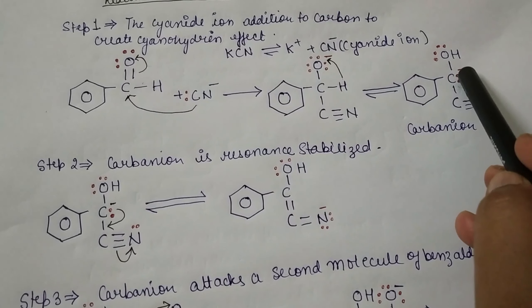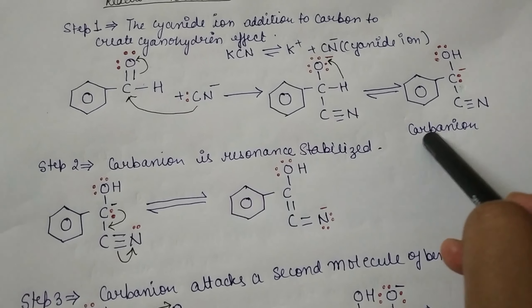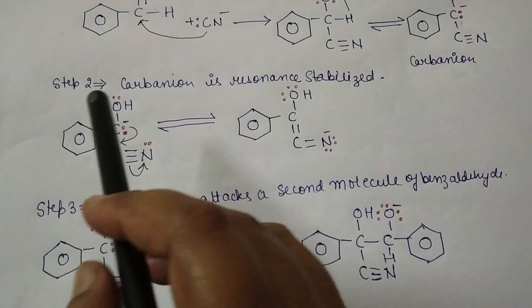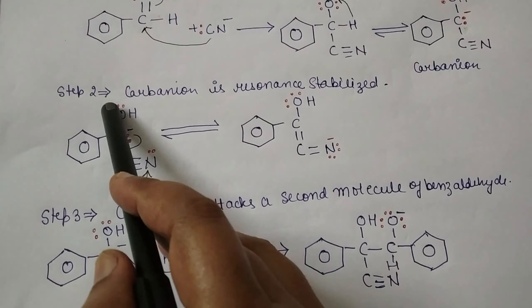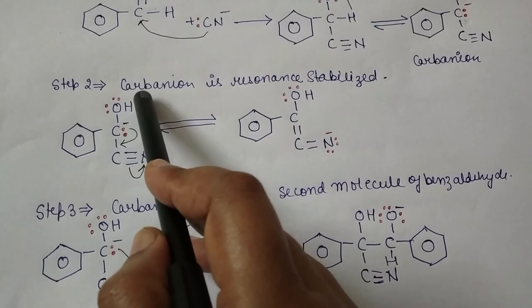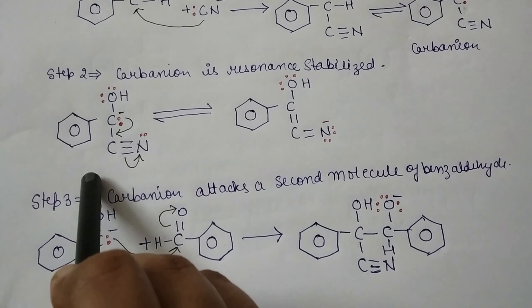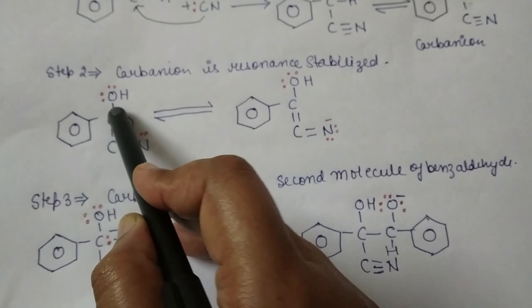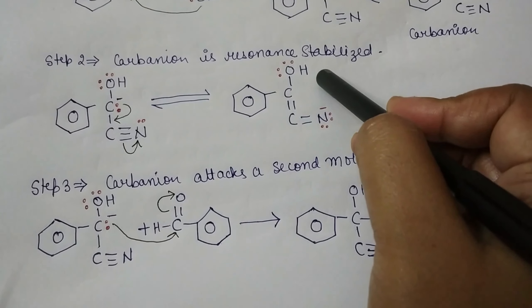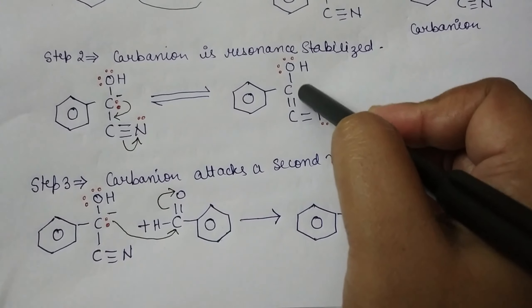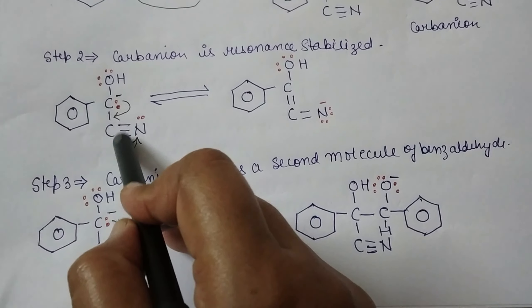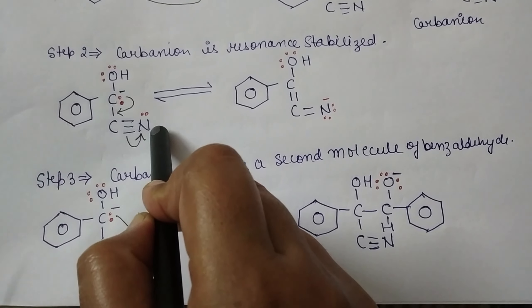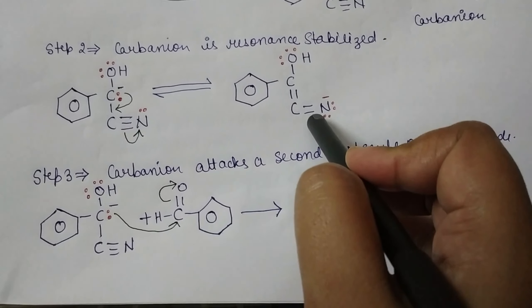This structure is in equilibrium with a carbanion structure. Here you can see the reshuffling of a proton takes place: the hydrogen present on the carbon rearranges and moves onto the oxygen, forming an OH group. So both these structures are in equilibrium. This is the carbanion — a compound in which the carbon has a negative charge. In the first step, carbanion formation takes place.